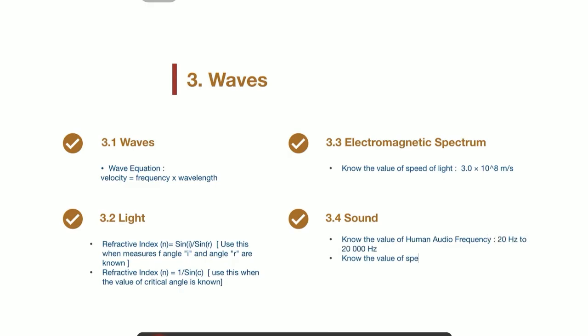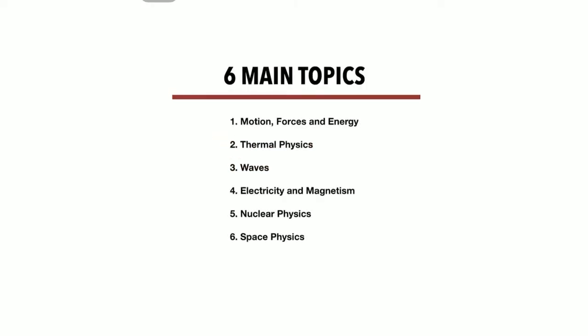Now let's explore some formulas for sound. First off, you need to know that human beings can hear sound in frequency range of 20 hertz to 20,000 hertz. And lastly, the speed of sound in air is approximately 330 to 350 meters per second. We have covered all the important formulas related to waves in chapter 3.